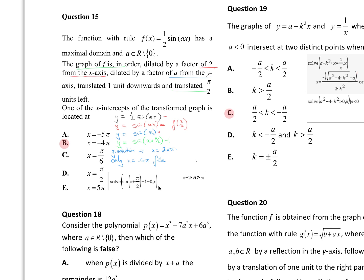Dilate by a factor of a from the y, which is the same as f of x on a — this cancels out the a's, leaving me with sine x. Translate 1 down and π on 2 units left, giving me sine(x + π/2) minus 1. So there's my new function.